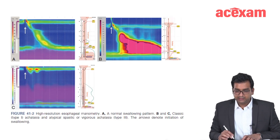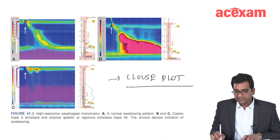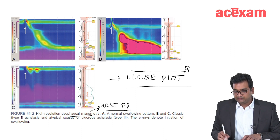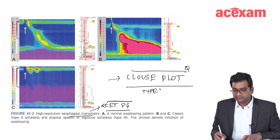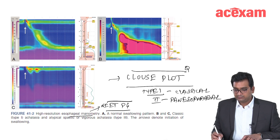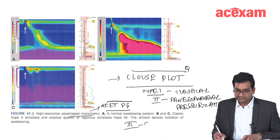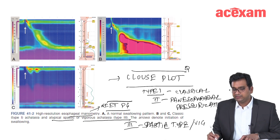On manometry, we will see a diagram known as the Klaus plot. A question on manometry findings was asked in NEET PG 2020. The types of achalasia are: Type 1 is the classical type, Type 2 is achalasia associated with panesophageal pressurization, and Type 3 is the spastic type, also known as vigorous achalasia.